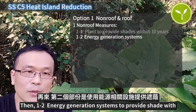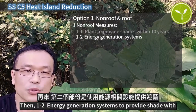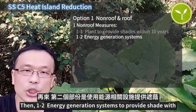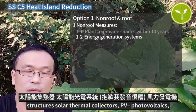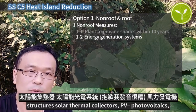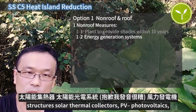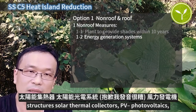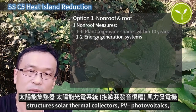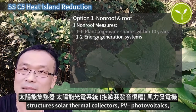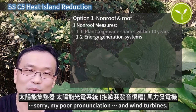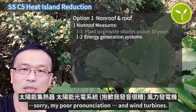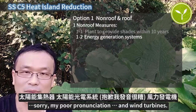1-2: energy generation systems to provide shade with structures — solar thermal collectors, PV (photovoltaics), and wind turbines.